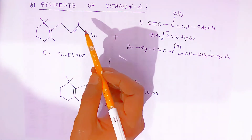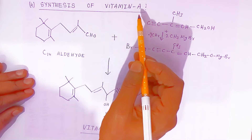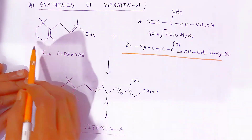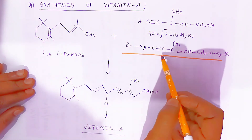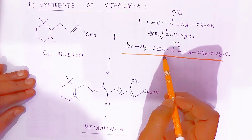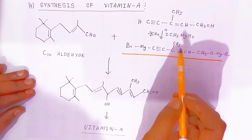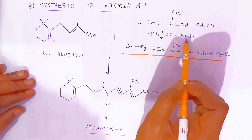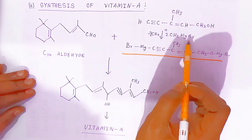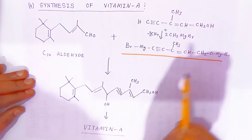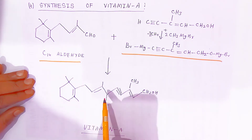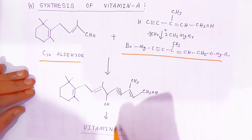We can also synthesize vitamin A. A C14 aldehyde is combined with a specific compound. That compound first reacts with methyl magnesium bromide to form an intermediate reactant. This intermediate then combines with C14 aldehyde and the product obtained is vitamin A.